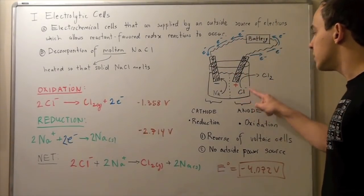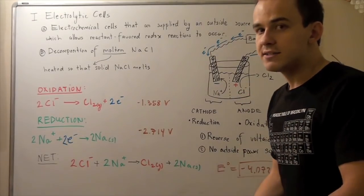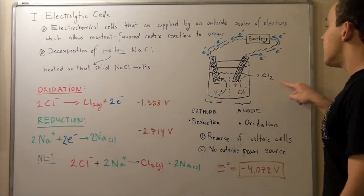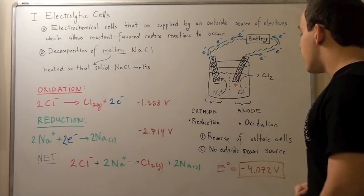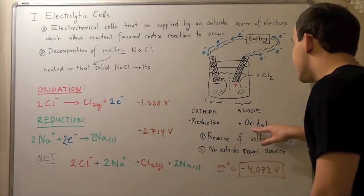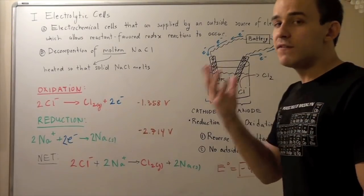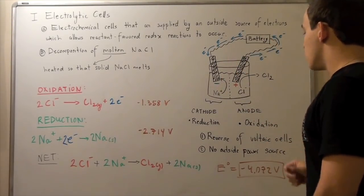So what happens when electrons leave? Well, this guy is oxidized into diatomic Cl2 gas. And so it evaporates into our environment. And this is where oxidation takes place. And so, by definition, this guy is our anode.